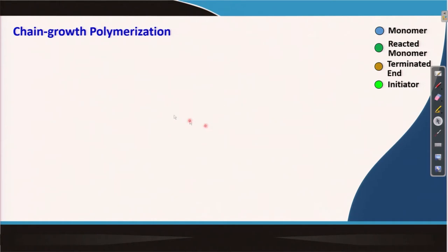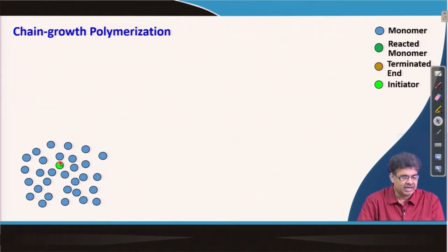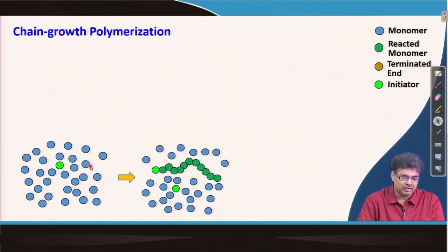Let us discuss chain growth polymerization. If we have a cluster of monomers shown here as blue spheres, once we activate one initiator — either by heating the solution, shining light, or some other means — a radical, anion, or cation generates. It then reacts with a monomer and initiates a chain, which reacts with another monomer, then a third, and so on.